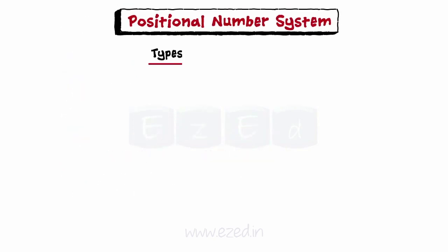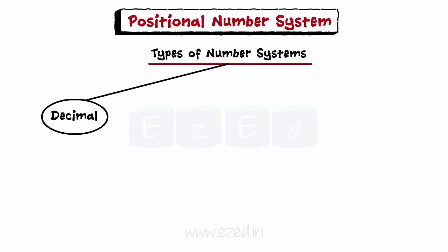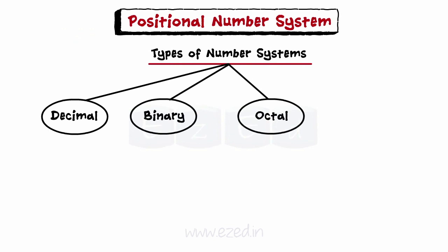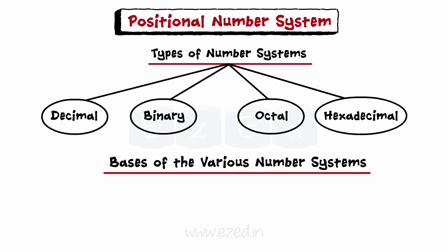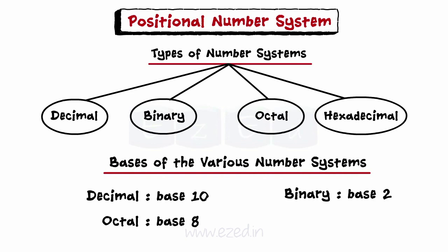The various types of number systems used in computers are decimal, binary, octal, and hexadecimal. The bases of the various number systems are: decimal, base 10; binary, base 2; octal, base 8; hexadecimal, base 16.